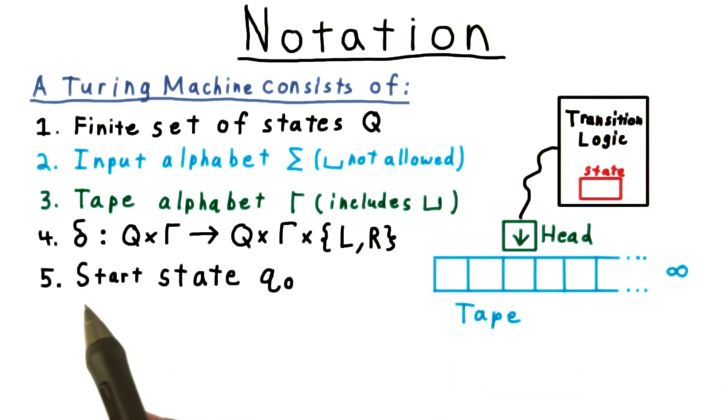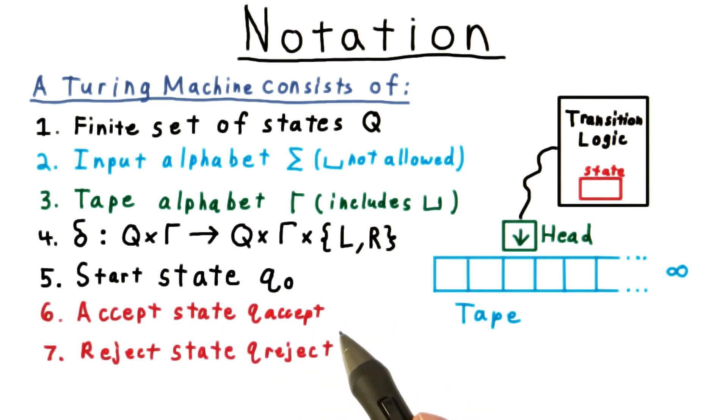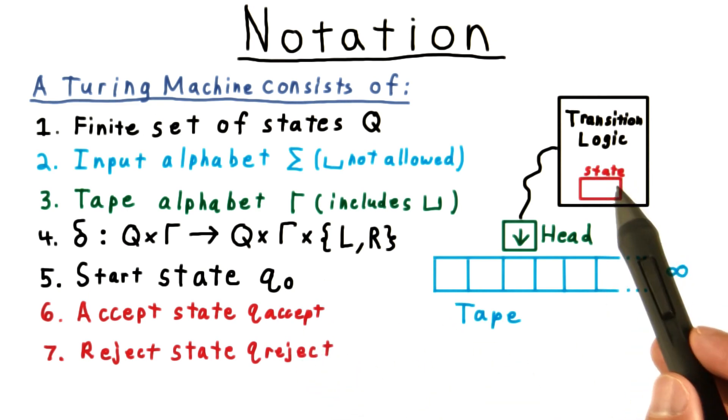A Turing machine also specifies a start state. The machine always starts in the first position on the tape and in this state. And finally, we have an accept and a reject state. When these are reached, the machine halts its execution and displays the final state.